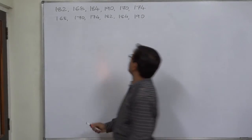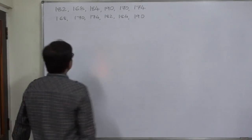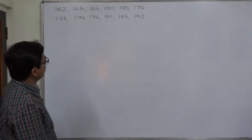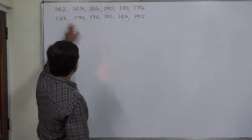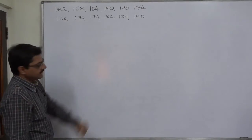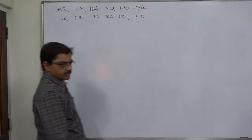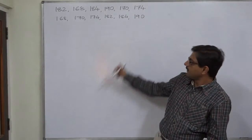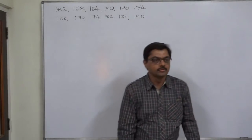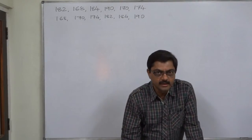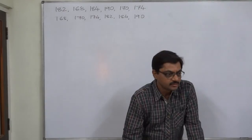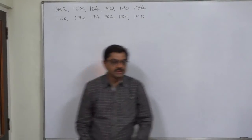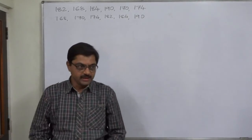Friends, we have a data with six data values. The lowest value is 168 and the highest value is 190. For this data, we are going to determine various measures of dispersion, or say measures of variation.